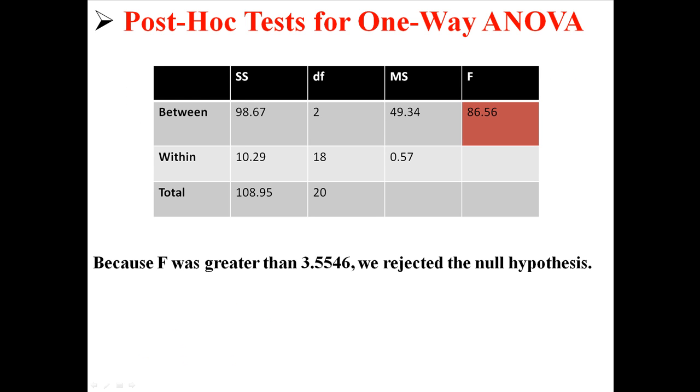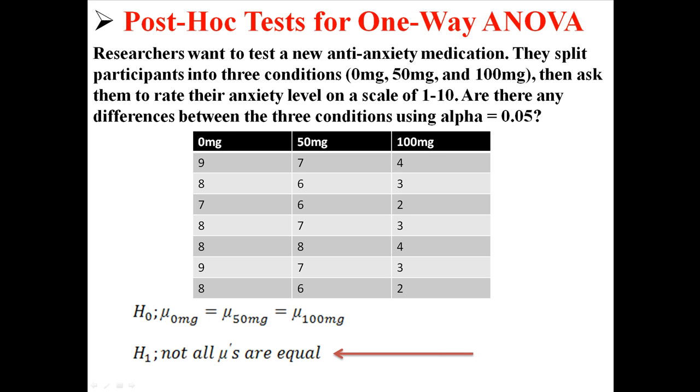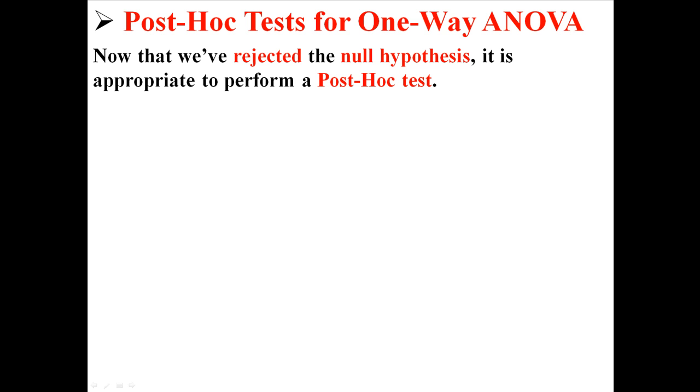And we ended up finding out that that was true. We did our ANOVA, we rejected the null hypothesis, and we found out that the groups are different. Our alternative is true. So now that we've rejected the null hypothesis, it's appropriate for us to perform a post-hoc test.